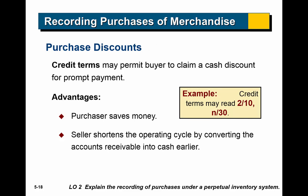There are also purchase discounts. Often a supplier offers a discount to the purchaser for paying their bill early — they want cash faster and are willing to take a little less. Credit terms are written like this: 2/10, N/30. That means a 2% discount if paid within 10 days, or the net full amount is due within 30 days. This gives the buyer the option of taking the 2% discount by paying early or paying the full amount within 30 days. The purchaser saves money and the seller shortens their operating cycle by getting cash quicker.